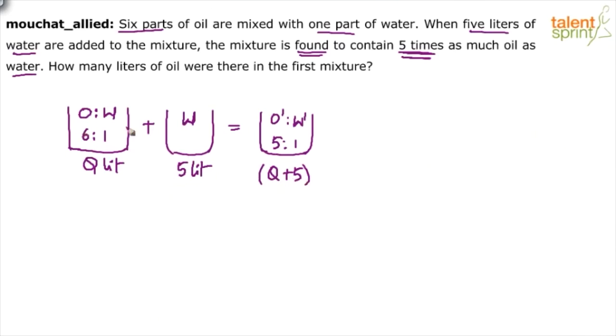So initial ratio was six is to one. You have added pure water, 100% water. Zero oil, only water. The new ratio becomes five is to one.